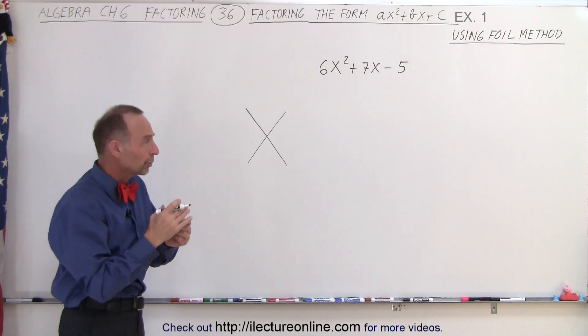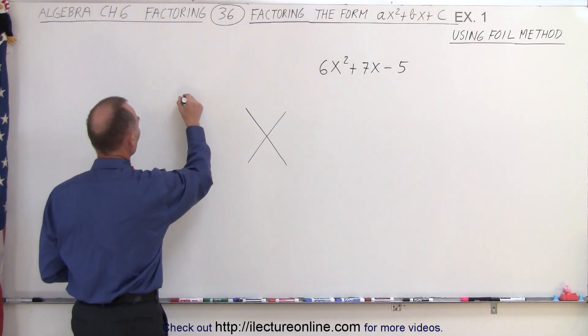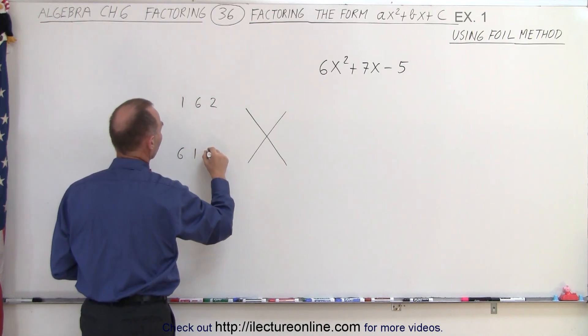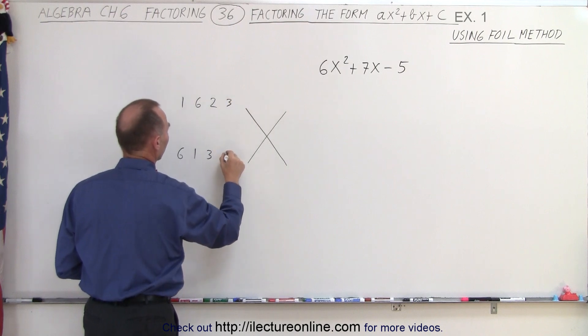How can we get the number 6 when we multiply two numbers together? Well, it could be 1 and 6, it could be 6 and 1, it could be 2 and 3, or 3 and 2.